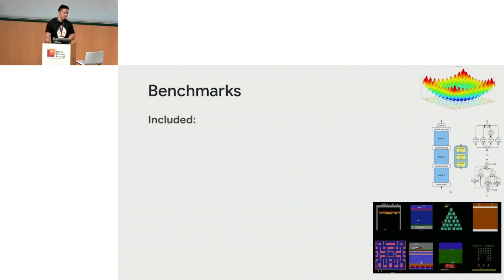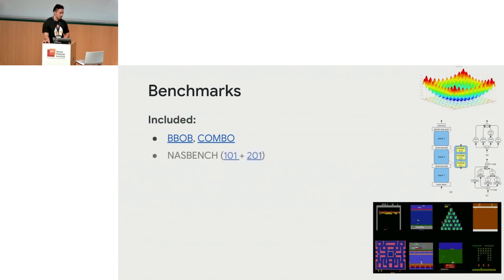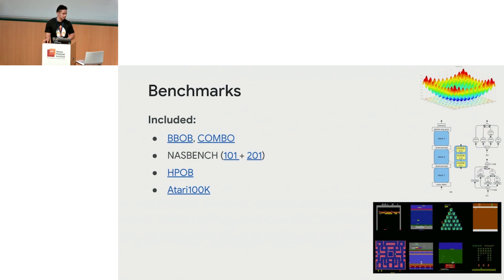We include a bunch of benchmarks in our suite: the typical BBOB functions — synthetic functions for black box testing — synthetic functions from the NASBench set (a neural architecture search dataset), HPOB benchmarks for transfer learning capabilities testing, and RL-type datasets for Atari games. On top of that, we have utility functions to generate more benchmarks from these objectives by adding noise, shifting, sparsifying, et cetera.